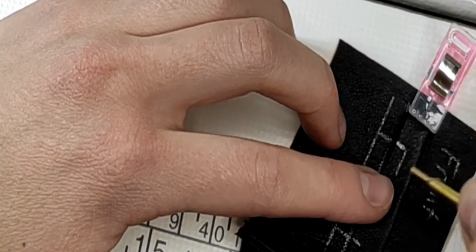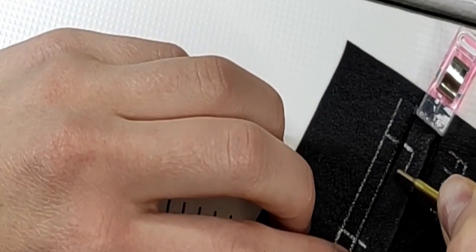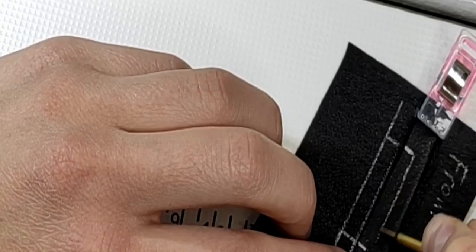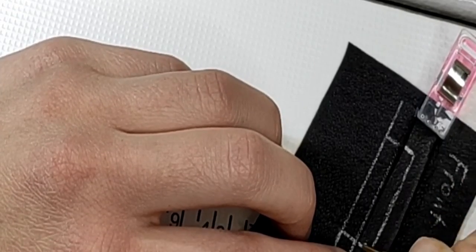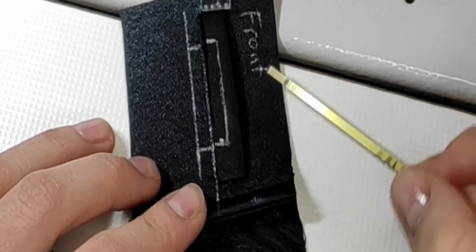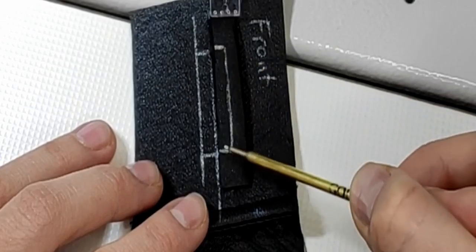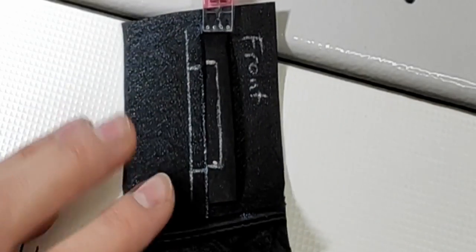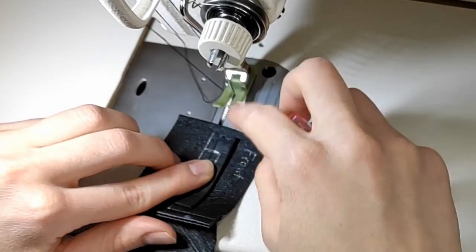Also I need to mark the center of my welt. This line will guide me when stitching. Now I stitch from the beginning to the end right on this line that we have drawn.